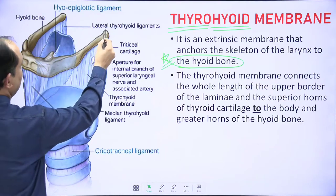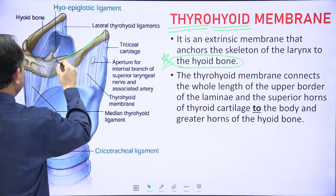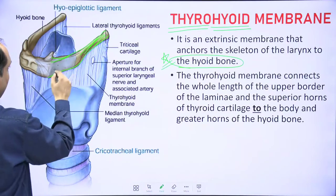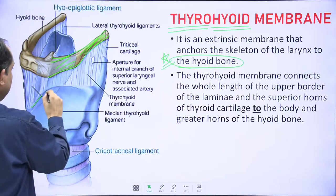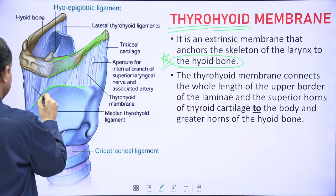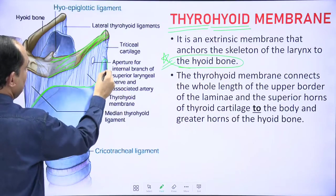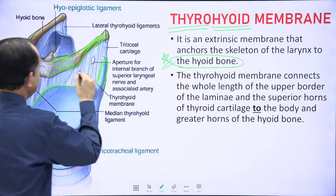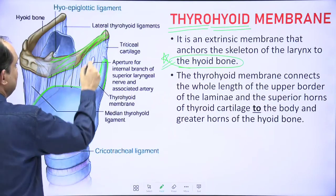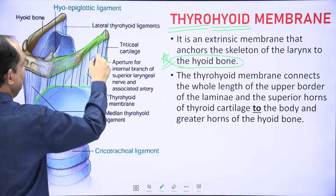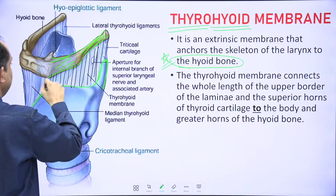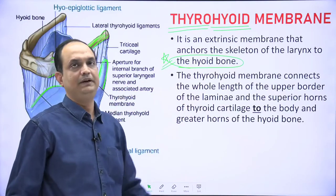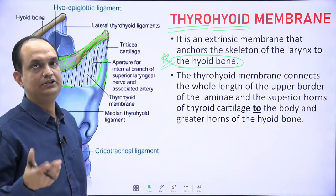In this diagram you can appreciate the hyoid bone with its greater cornu and body. In the lower part is the lamina of the thyroid cartilage and the superior cornu of the thyroid cartilage. The connection between them is known as the thyrohyoid membrane. It is present in the upper part of the larynx, connecting the thyroid cartilage and hyoid bone.